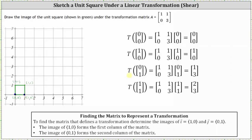Next, the transformation of (0, 1) is equal to (1, 3), which means the point (0, 1) after the transformation is the point (1, 3) — this point here. And the transformation of (1, 1) is equal to (2, 3), which means the point (1, 1) after the transformation is the point (2, 3).